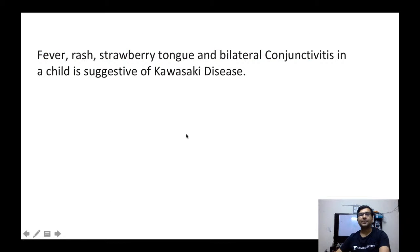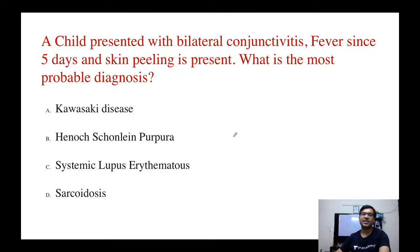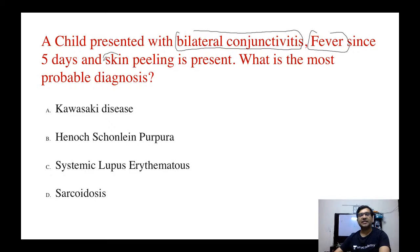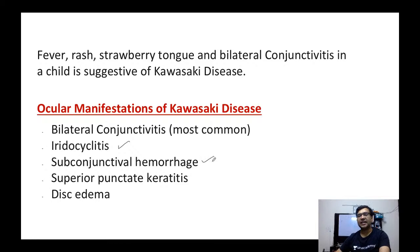Next question (previous year): a child presented with bilateral conjunctivitis and fever for 5 days with skin peeling. What is the most probable diagnosis? Here, medium-sized blood vessels are involved along with bilateral conjunctivitis, fever, and skin peeling — these are features of Kawasaki's disease. Other ocular manifestations of Kawasaki's disease include iridocyclitis, subconjunctival hemorrhage, superior punctate keratitis, and disc edema.